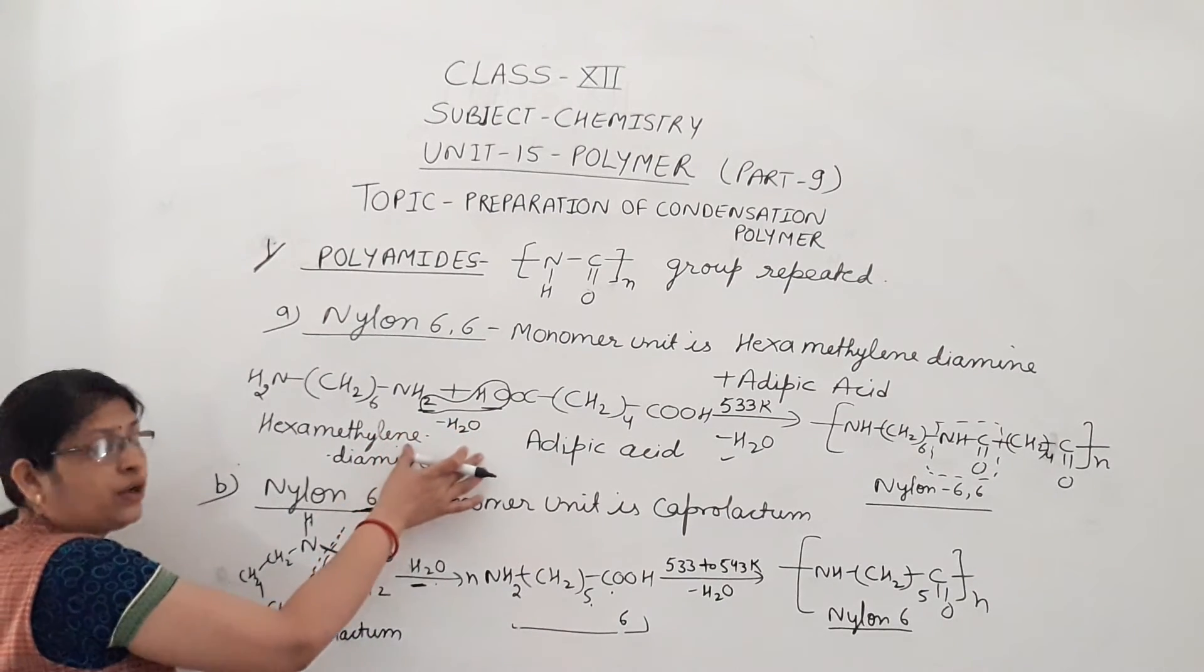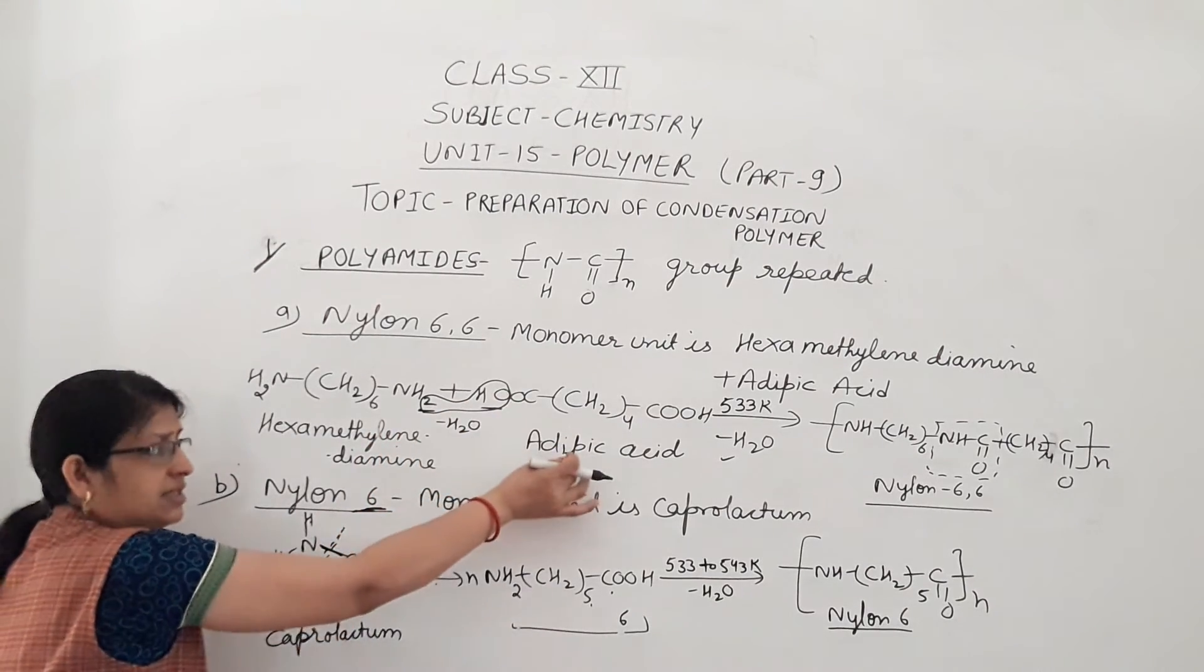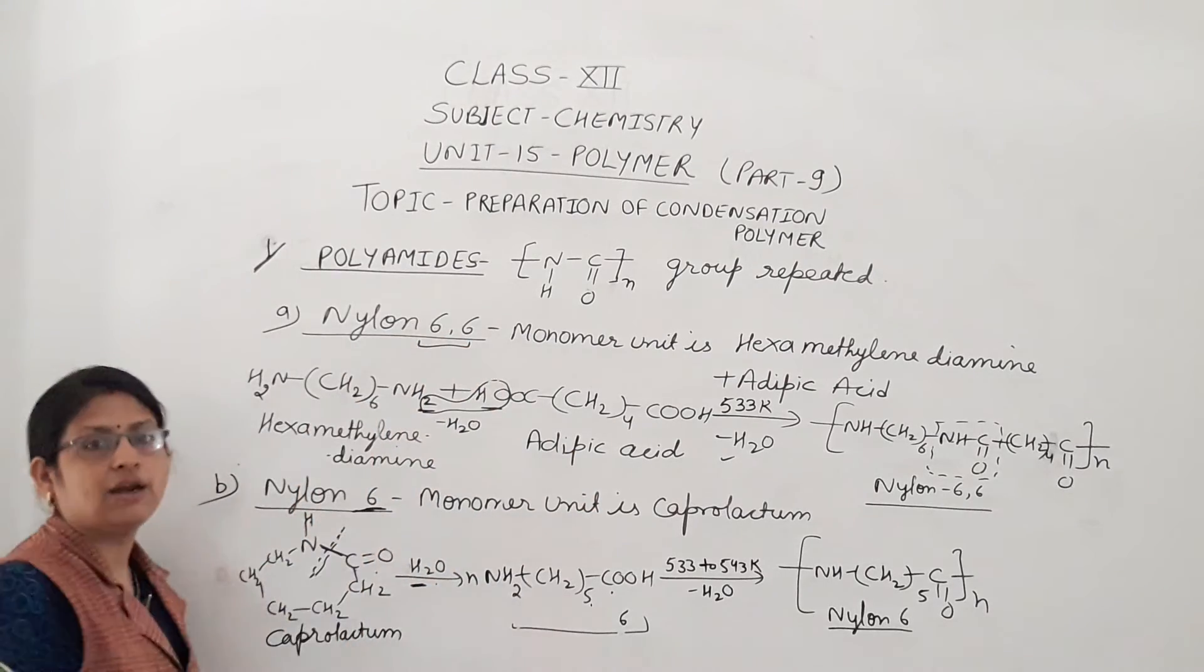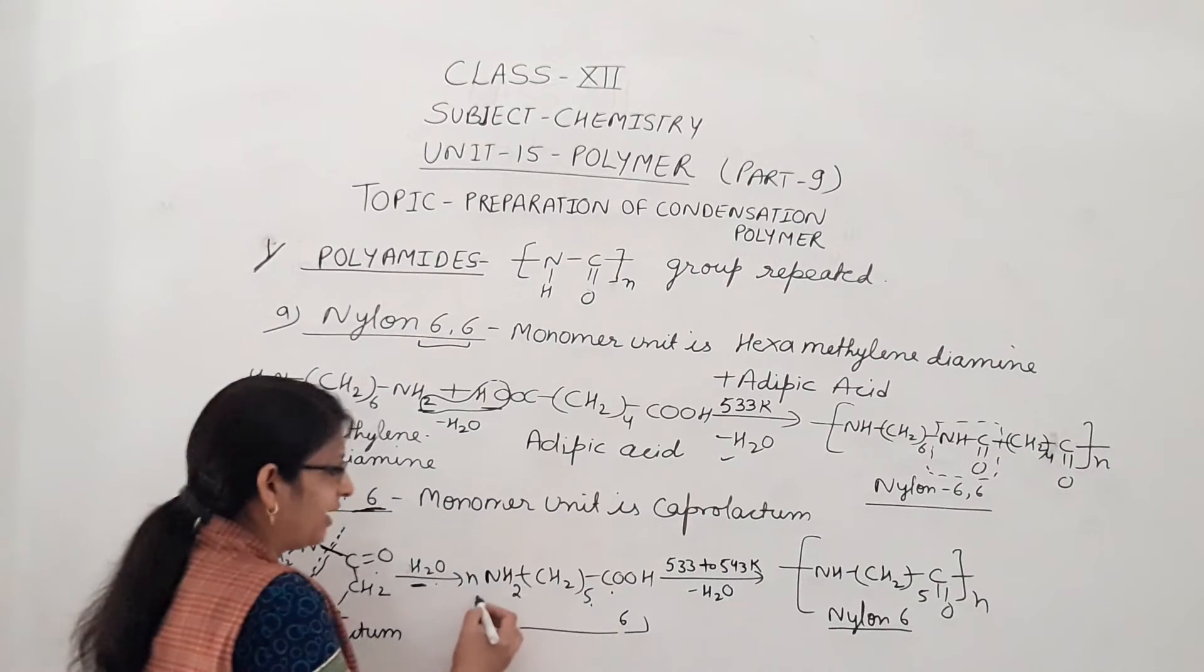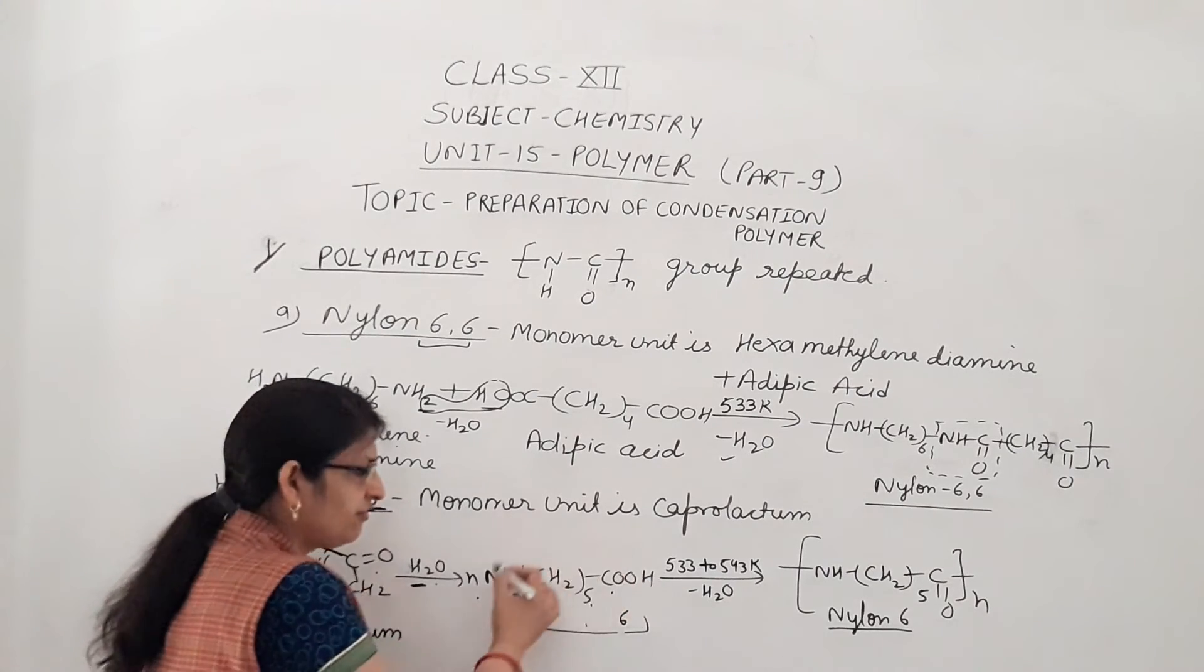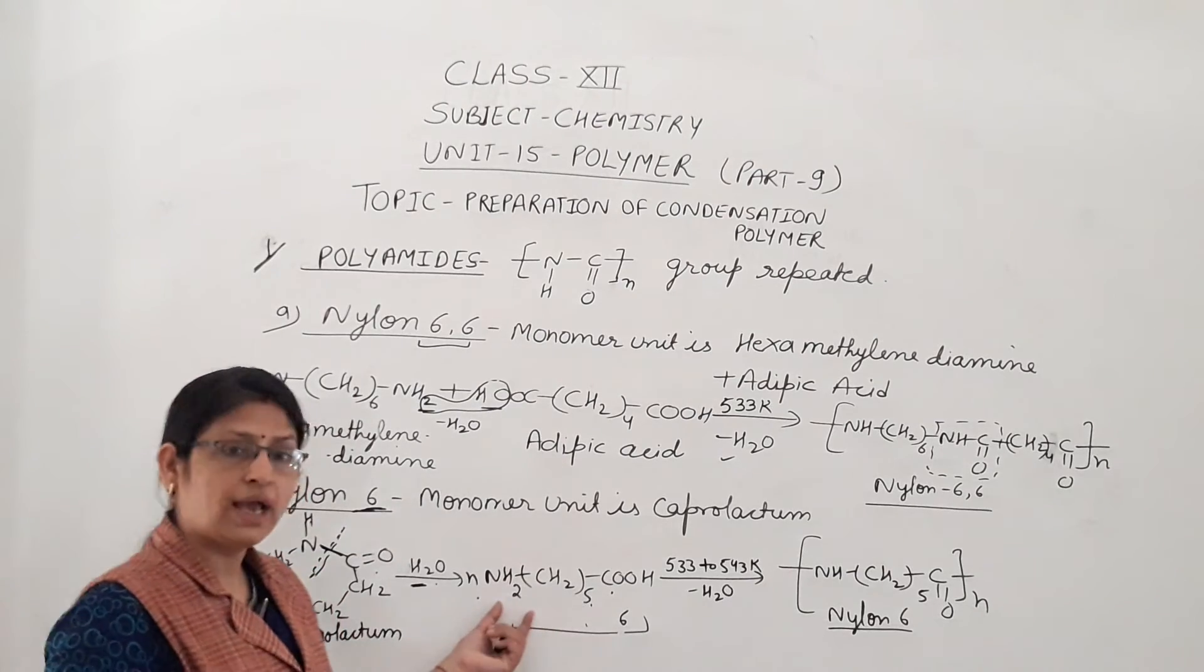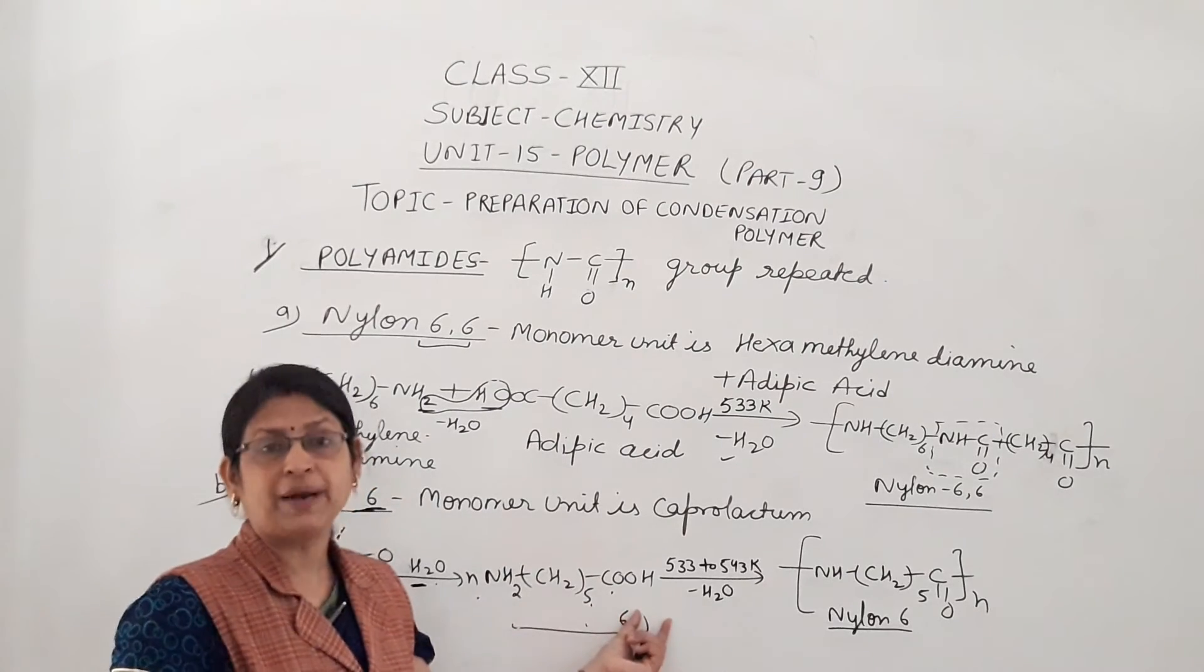Now when we take N molecules of it, in one monomer unit you see here, for one monomer unit both NH2 and COOH groups are present. In this monomer unit both functional groups are present in one monomer unit.